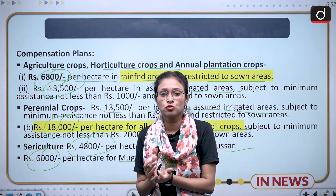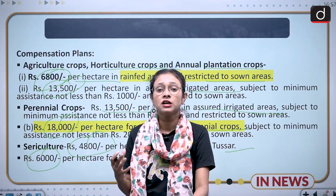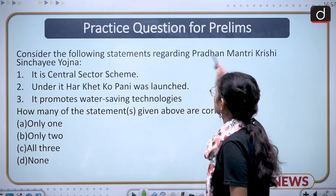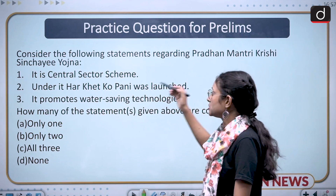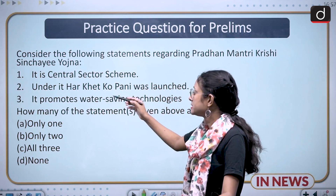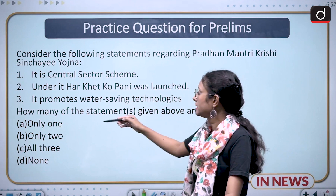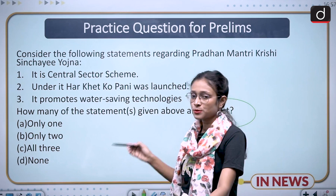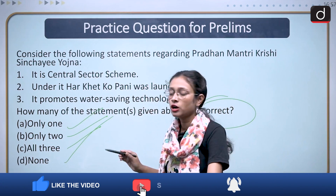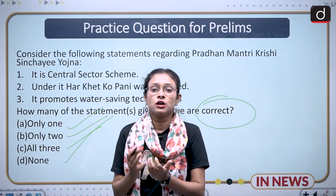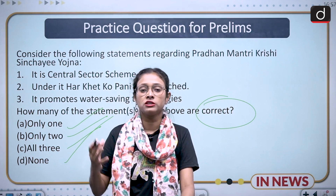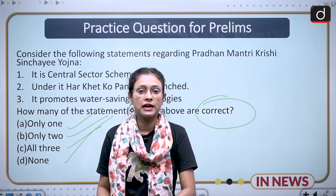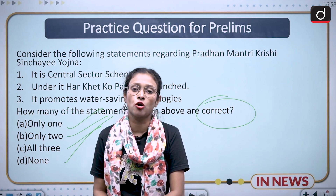We need to do a lot more to compensate for the monsoon deficit. That's it for today's lecture. Practice question for prelims: Consider the following statements regarding Pradhan Mantri Krishi Sinchayee Yojana — first, it is a central sector scheme; second, under it 'Har Khet Ko Pani' was launched; third, it promotes water-saving technology. How many statements are correct? Answer in the comment section. Also revise the impact of bad monsoon on the Indian economy for mains.